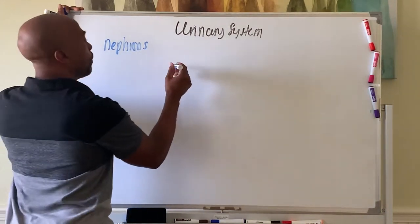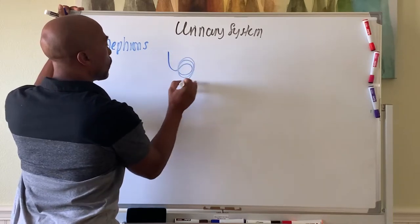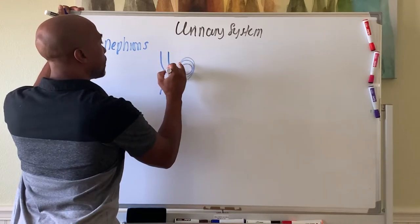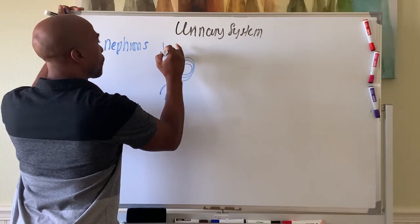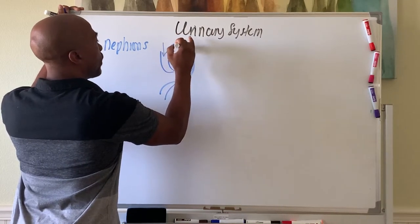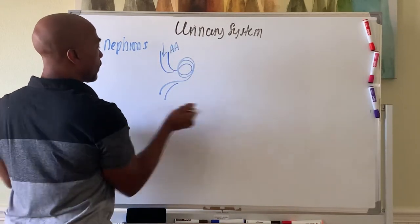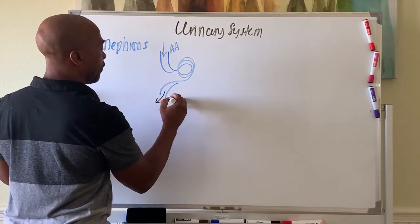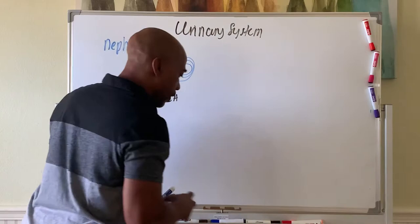Alright, so nephrons structurally have a glomerulus where blood comes in and blood leaves. So blood enters the glomerulus through the afferent arteriole and leaves the glomerulus through the efferent arteriole.